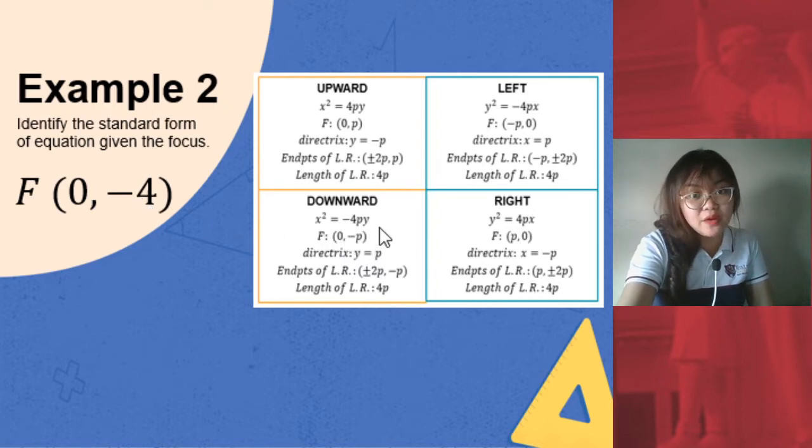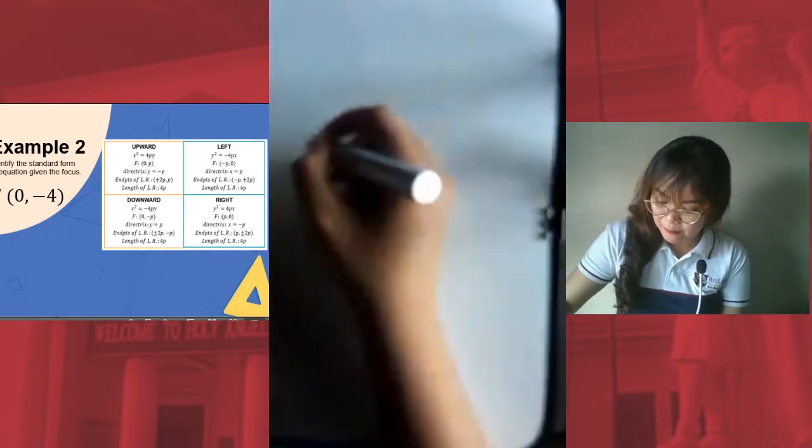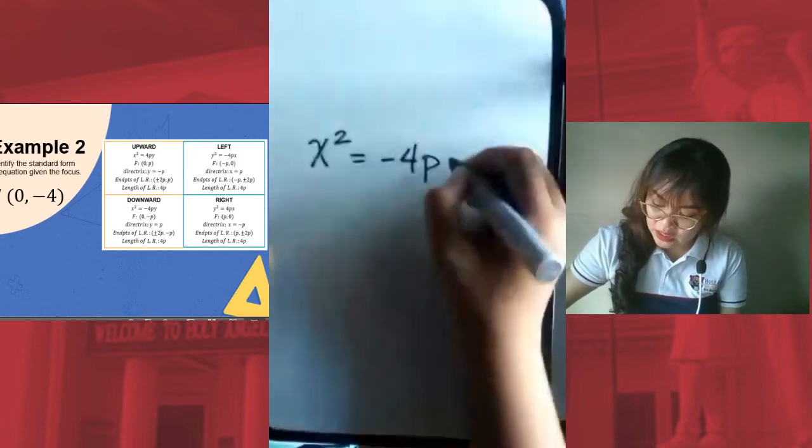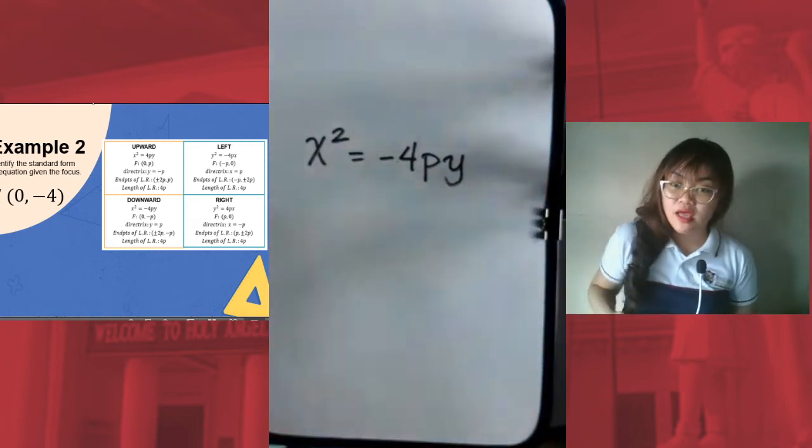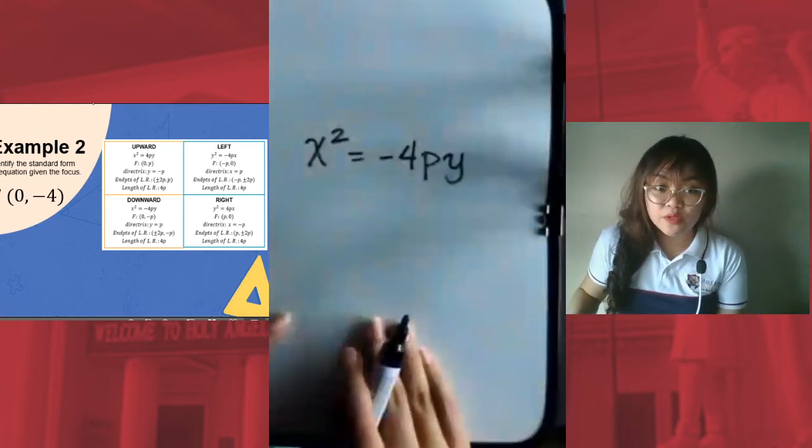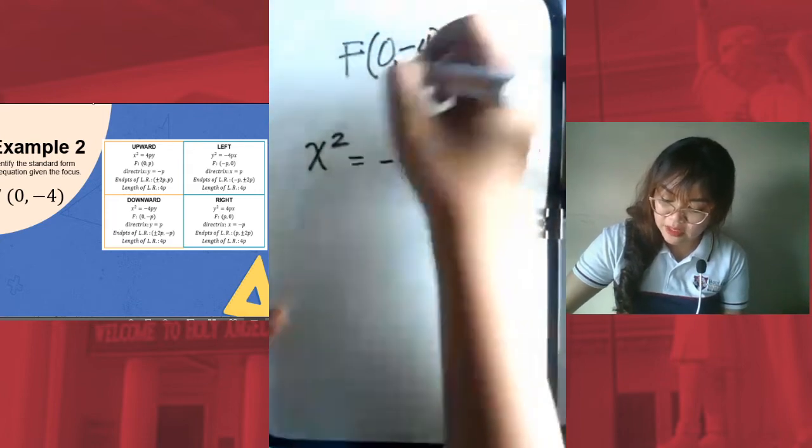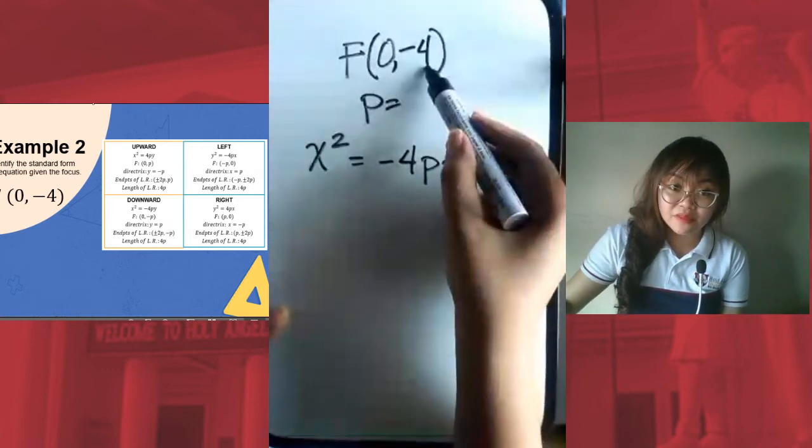Now that we know it's a parabola opening downward, we use this equation: x² = -4py. So let's solve together. We have our given, x² = -4py. This is the formula for our standard equation. From the focus, we are able to identify the value of p. What's the value of p from our focus? It's 4.